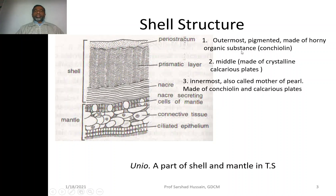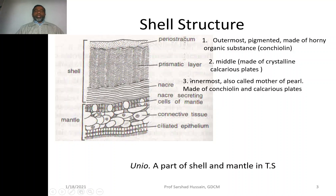A horny organic substance means a substance which normally resembles the horns of animals — the same material that makes up animal horns. Below this there is a very thick second layer called the prismatic layer. It is made up of crystalline calcareous plates — that is, calcium carbonate — so it is crystalline in nature.